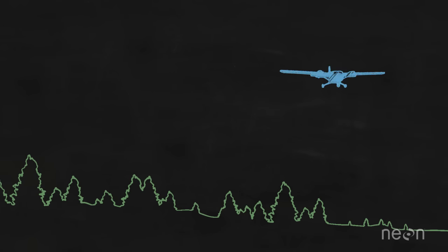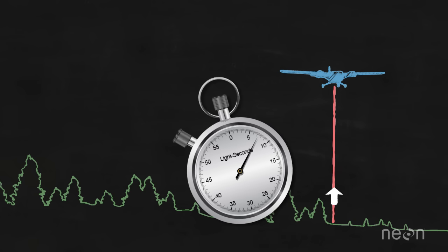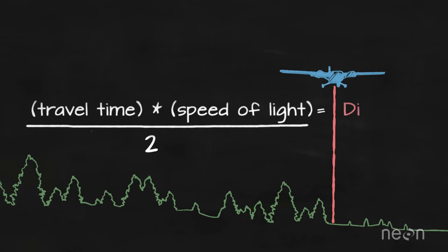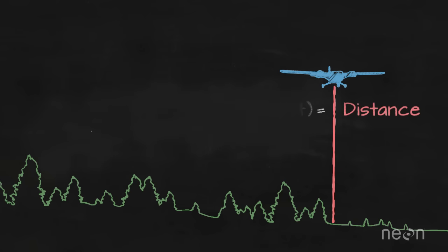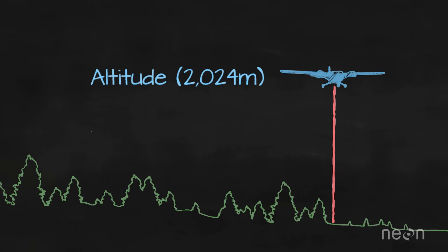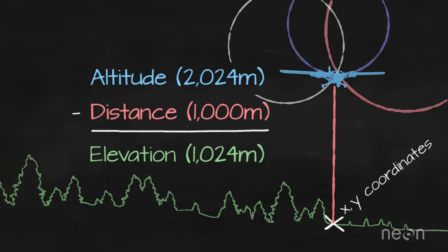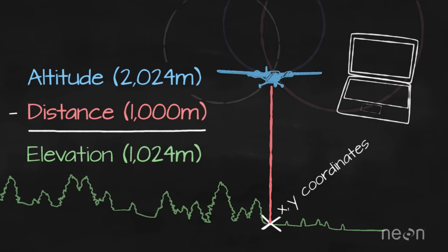Let's put this all together one last time. The LIDAR system emits pulses of light energy towards the ground using a laser, then records the time it takes for the pulse to travel to the ground and return back to the sensor. It converts this time to distance using the speed of light. The system then uses the plane's altitude, tilt, and the angle of the pulse to calculate elevation, and uses a GPS receiver to calculate the object's location on the ground. All of this information is recorded on a computer mounted on the airplane. And that is how a LIDAR system works.